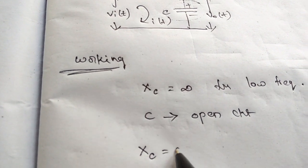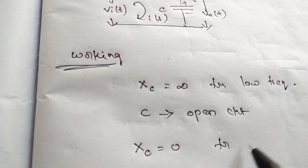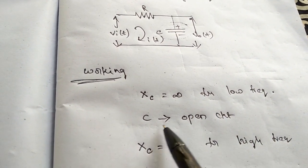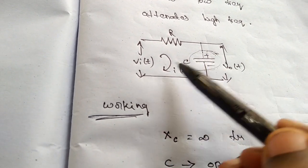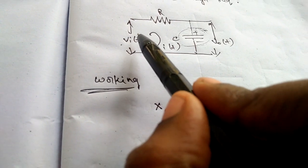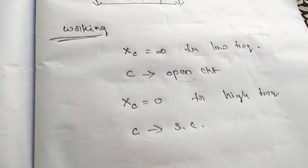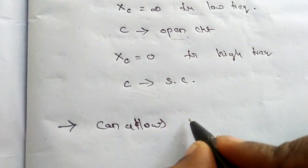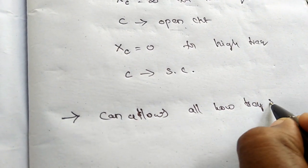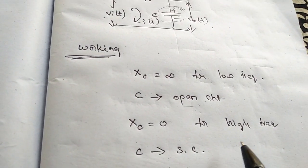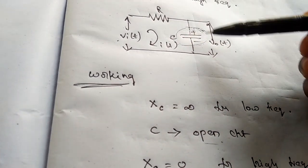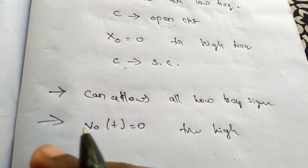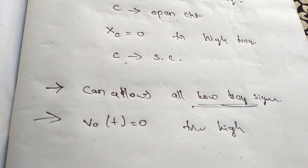Whenever high frequencies occur, the reactance will be zero, so the capacitor will act as a short circuit. Whenever the capacitor is in open circuit, whatever input we supply, that entire input will appear at the output port, so the circuit allows all low frequency signals. When a high frequency signal is supplied, the capacitor acts as a short circuit, so the output will be zero — it attenuates high frequency signals.